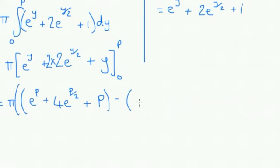Take away what we get when we put 0 in. And when we put 0 in, we're going to get e to the 0, which is 1, plus 4 e to the 0, which is also 1, so 4, plus 0.